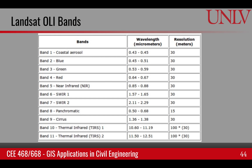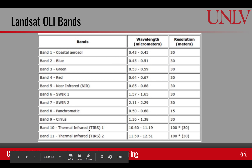The Landsat OLI bands available on Landsat 8 include 11 bands total. These cover two blue bands, a green, a red, an infrared, two short-wavelength infrared bands, a panchromatic band covering roughly the green to red range, and a cirrus band in the infrared region used for cloud monitoring. There are also two thermal infrared bands available.